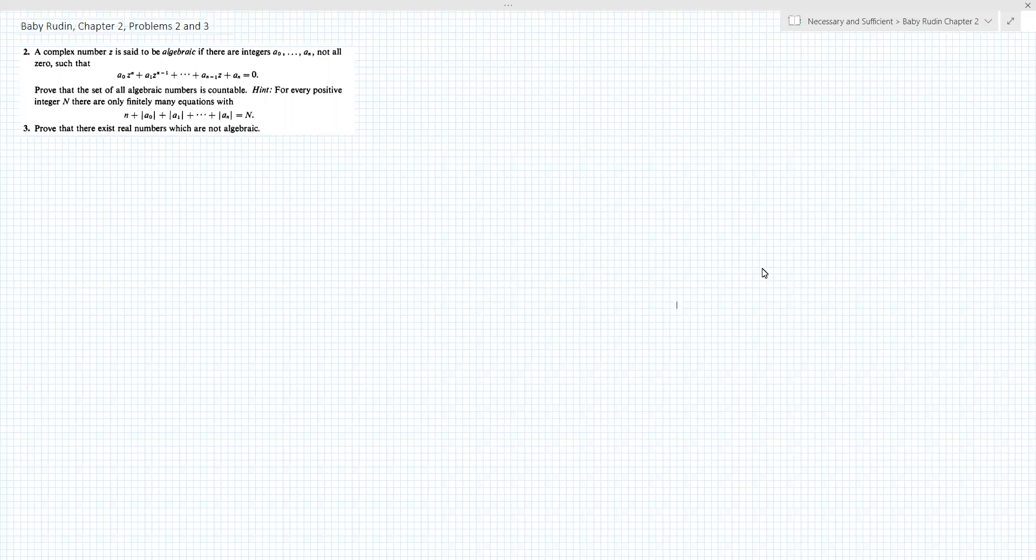Hello everybody, in this video we will be solving problems 2 and 3 from chapter 2 of Baby Rudin, that is Rudin's principles of mathematical analysis. Problem 2 asks to show that a complex number z, well if I have an algebraic number, the set of all algebraic numbers is countable. What that means is, given a complex number z, I can find a polynomial with integer coefficients that has z as a root. So let's start with problem 2.